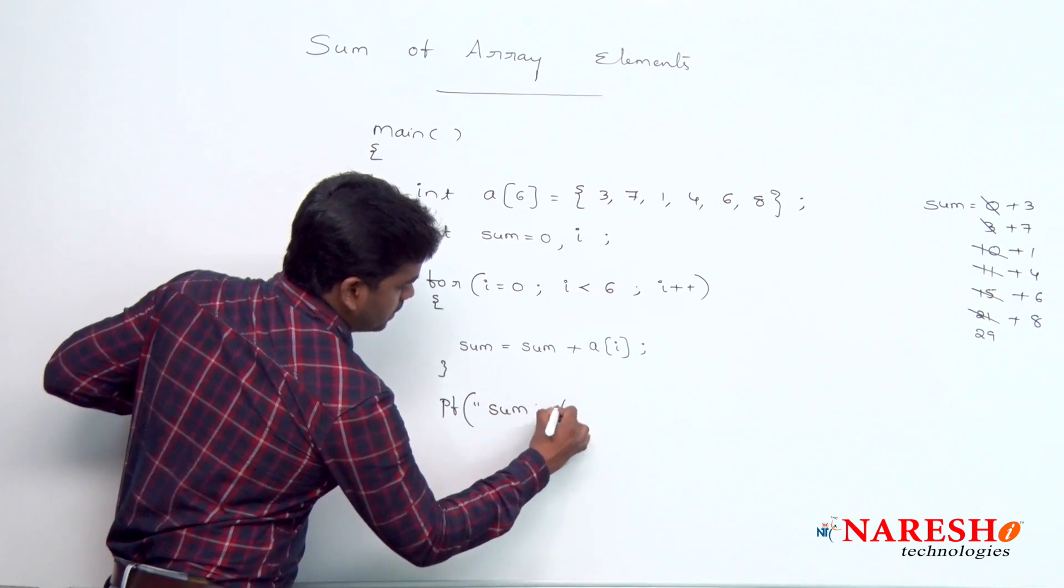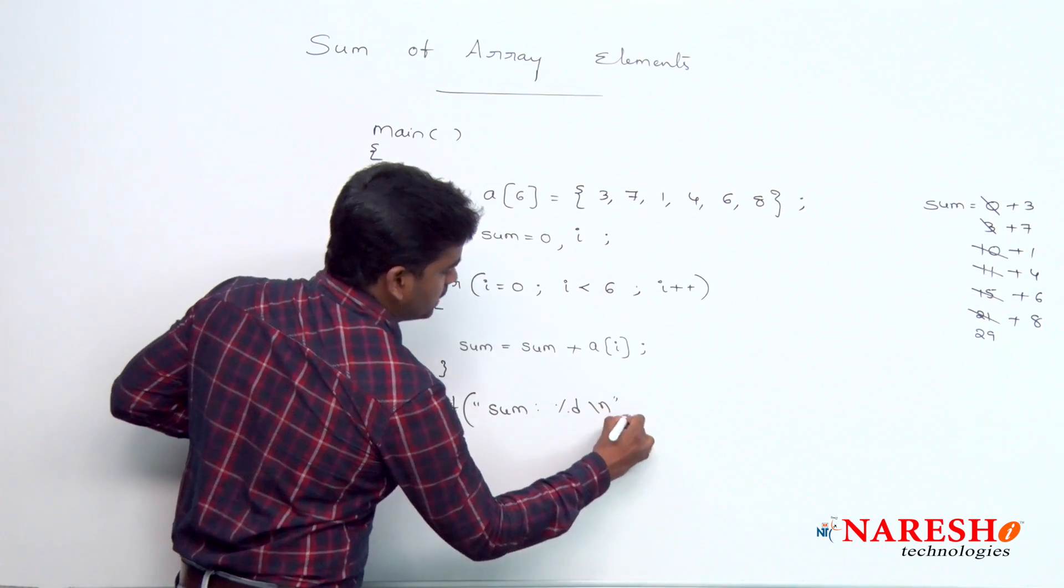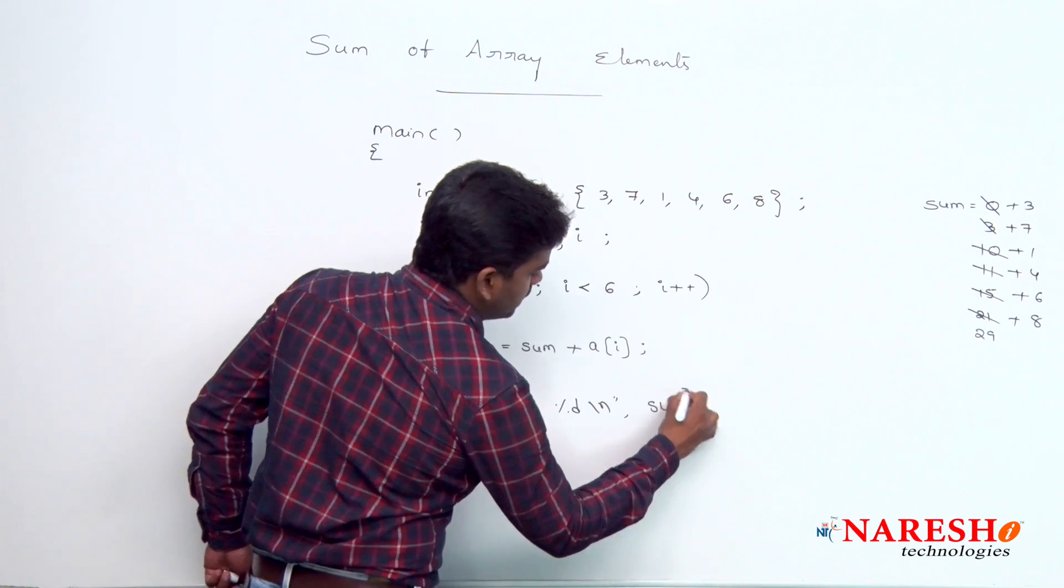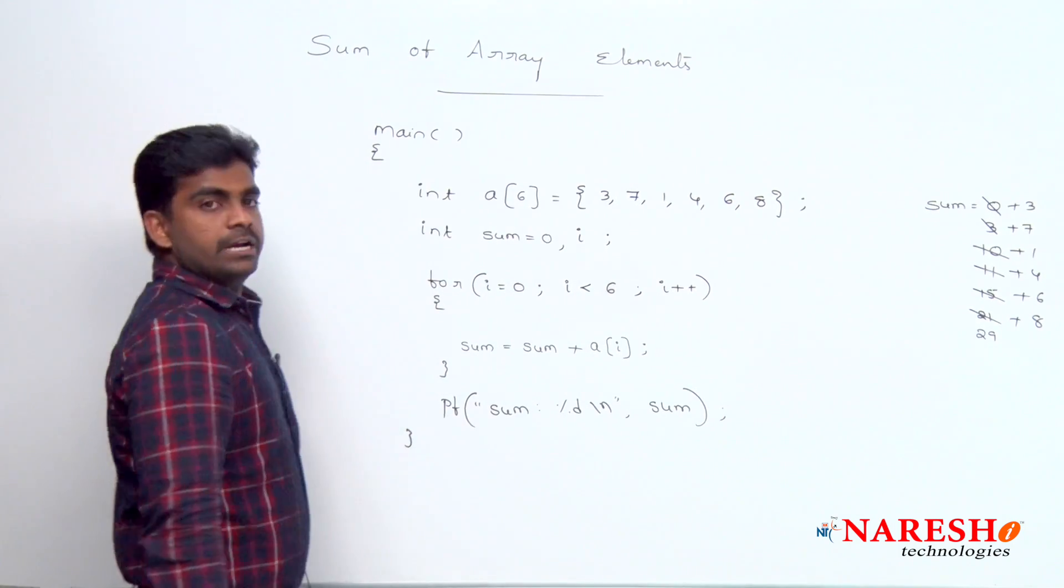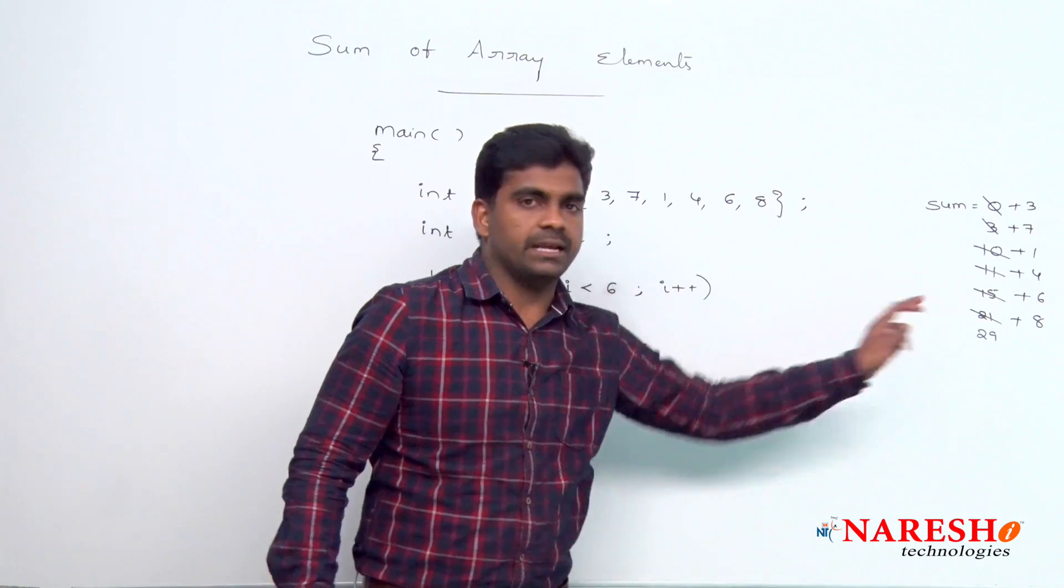It will come out and we are printing that sum value. Sum percentage d, here we are displaying sum. It will give the output of 29.